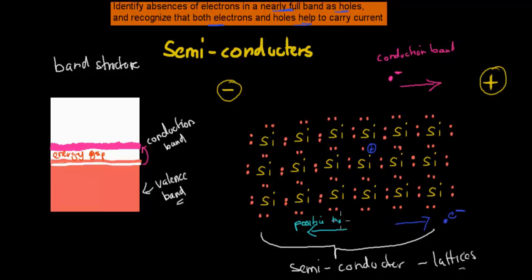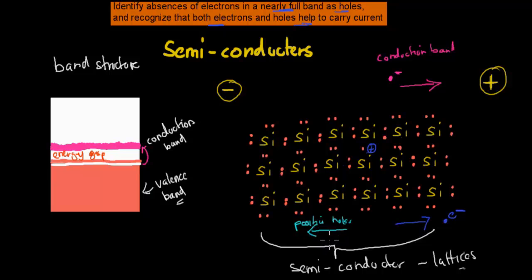And that makes sense if you think about where we started. The first hole was here, but the electrons always jumped in this direction to fill the hole, so the hole moved from here to over there. If we continue the whole thing, the positive hole keeps moving in this direction. What's actually happening is electrons are jumping in the opposite direction — they fill the hole, but as they fill the hole they leave a hole behind, so it seems like the positive holes are moving this way. The dot point says: identify the absence of electrons in a nearly full band as holes, and recognize that both electrons and holes help to carry current.